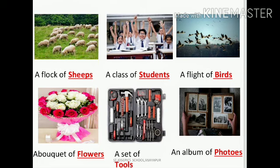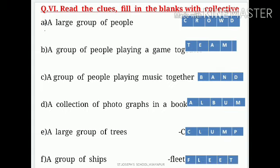Next activity — second main question: read the clues and fill in the boxes with the collective noun. They have given some clues in the sentences, so read the clues first, then fill the answers in the given boxes. The answer should be a collective noun. First one: a large group of people — we call it a crowd. C-R-O-W-D, five letters. Fill in the box. First answer is crowd.